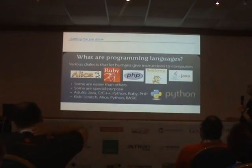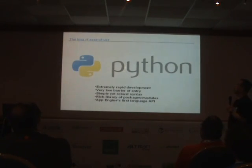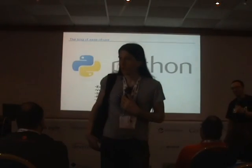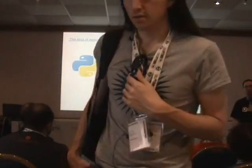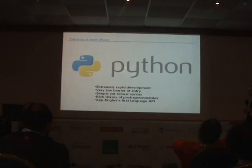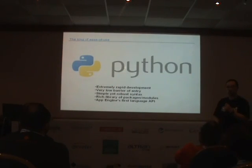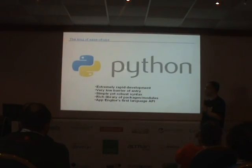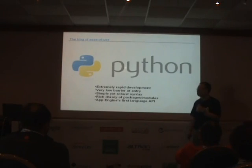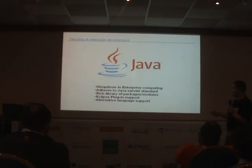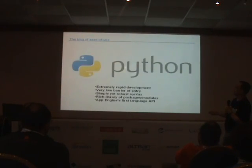Python was the very first runtime for App Engine, not just because Guido works for the App Engine team — that's just a coincidence. Python was chosen because you can develop very fast in it. Very low barrier of entry, you don't have to be a computer science major to use it, the syntax is easy, and there's a nice library of lots of packages and modules. App Engine came out in April of 2008, so it's three years old now.